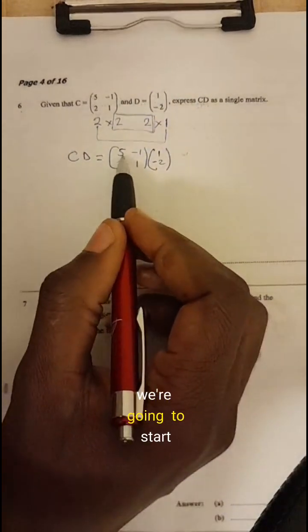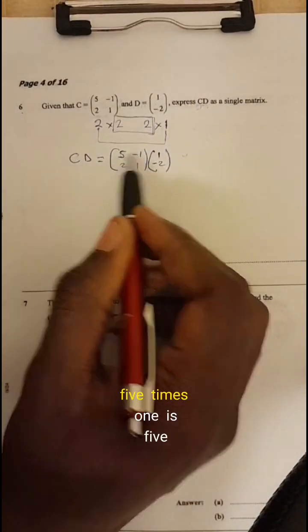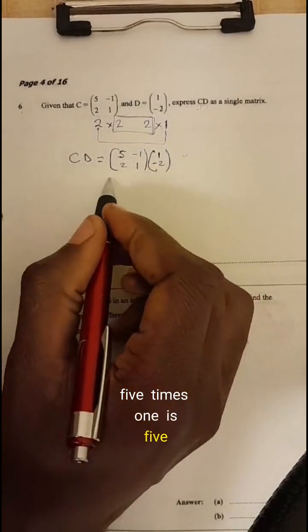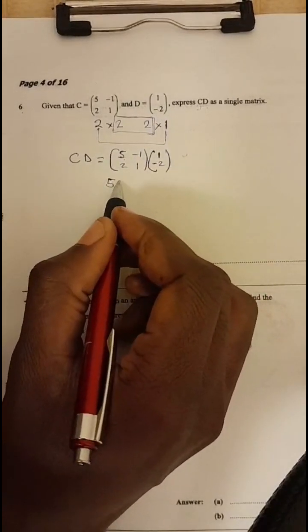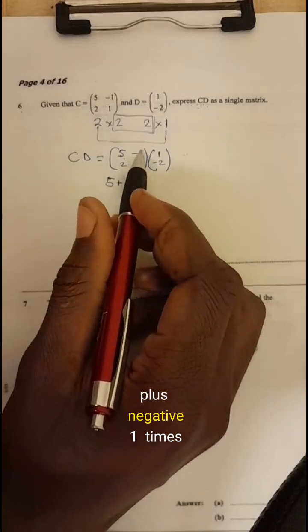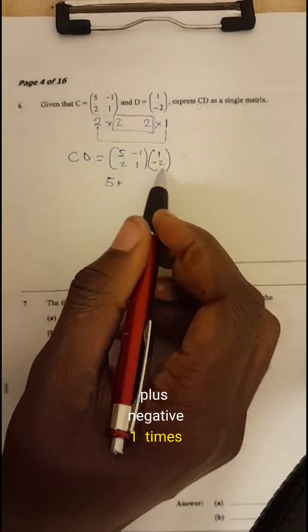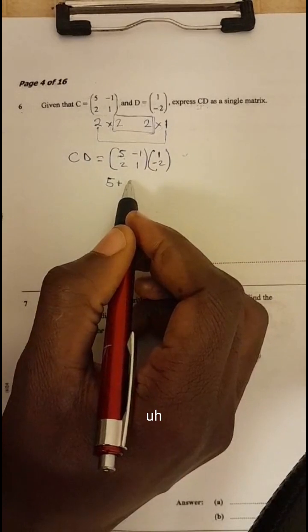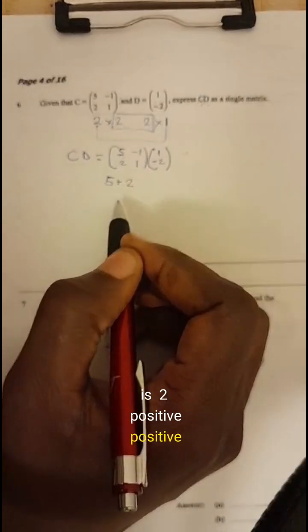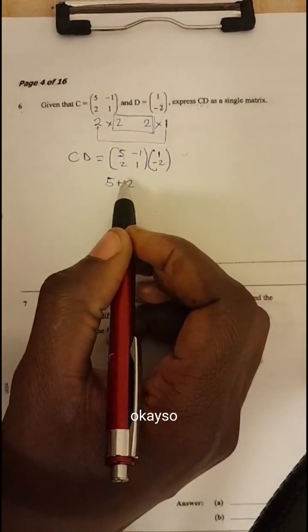Okay, so we're going to start with this row. So five times one is five, plus negative one times negative two is two, positive two. Okay.